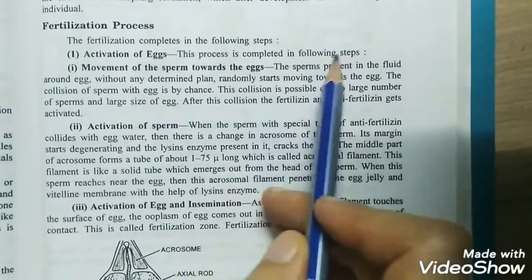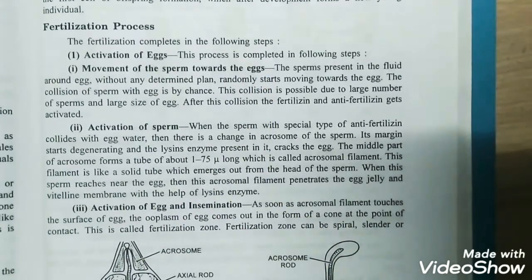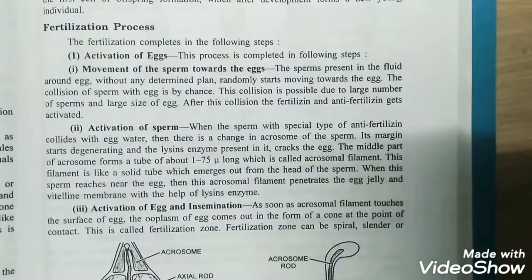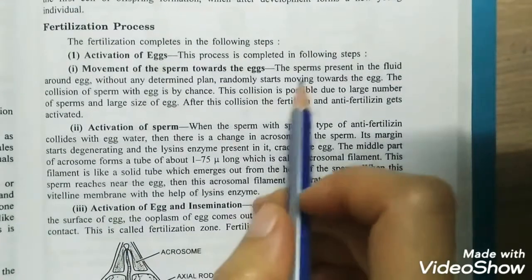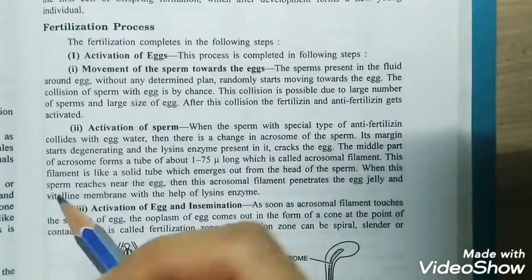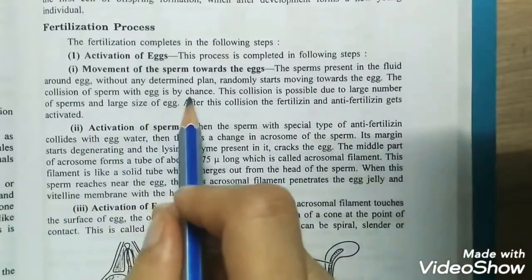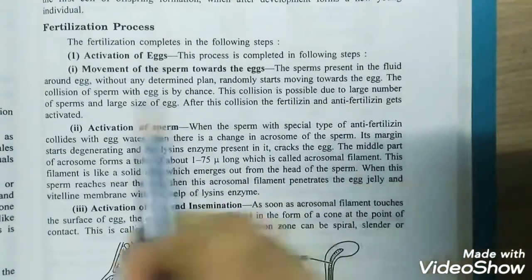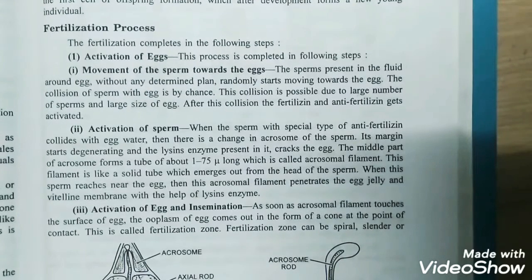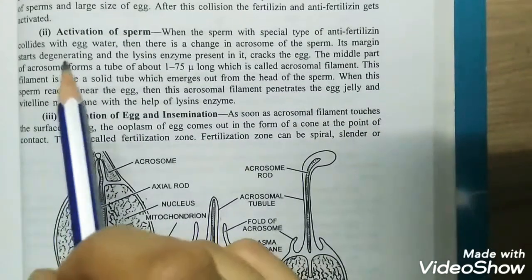The first process is activation of eggs, which is completed in the following steps. First is the movement of sperm towards the egg. The sperm will try to move towards the egg through some chemicals. The sperms present in the fluid around the egg randomly start moving towards the egg. There are some chemicals through which they are attracted towards the egg. The collision of sperm with egg is by chance, possible due to the large number of sperms and large size of the egg.